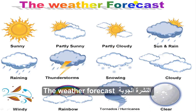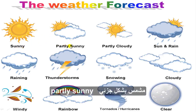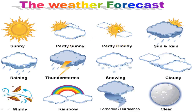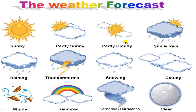Now, the weather forecast. You will find these words in the weather forecast. Sunny, it's sunny. It's partly sunny — partly sunny. It's partly cloudy — partly cloudy. It's not cloudy all of it, and it's not sunny all of it. It's partly sunny or it's partly cloudy. Sun and rain — sometimes it's sunny and it's raining at the same time.